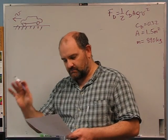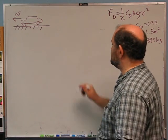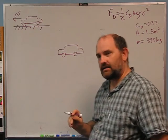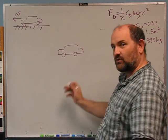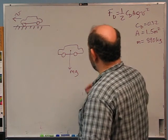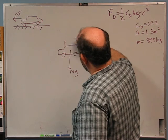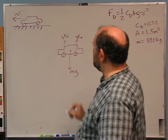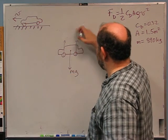I'm given a drag coefficient of 0.32, a face-on cross-sectional area of 1.5 square meters, and a mass for the car of 890 kilograms. The car has two-wheel drive — I'll come back to why that matters. How much torque must the engine supply to one of the wheels to keep the car going at 60 miles per hour? Let's start with the free body diagram — the car as just the body.